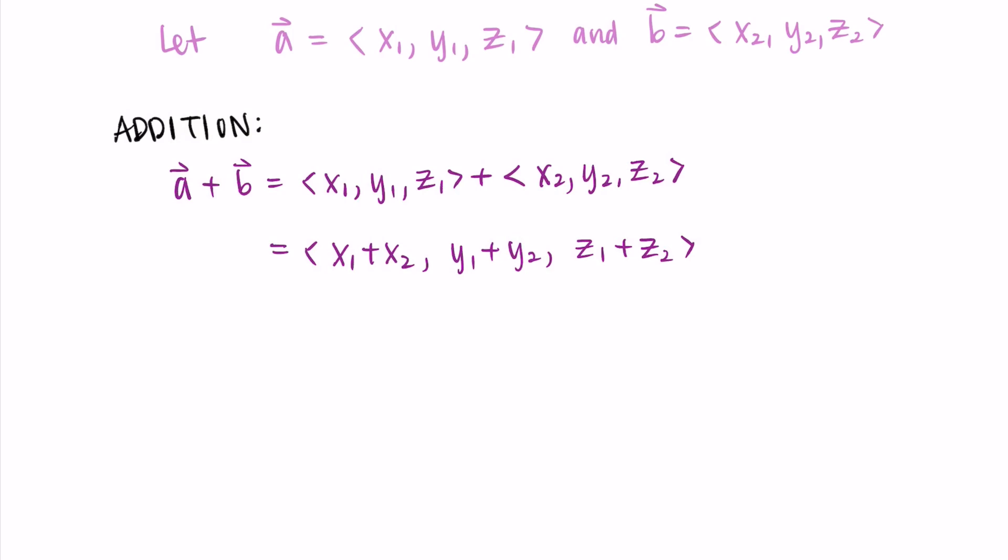So this should make sense just thinking about vectors in terms of movement. When we add two vectors, it's like we're doing both the a movement and the b movement. And the total movement would be all of the x movement, so x1 plus x2, and then all of the y movement, y1 plus y2, and all of the z movement, z1 plus z2. So this is as simple as adding the components. You can just think that addition works the way you'd want it to. Add the x's, the y's, and the z's, and make those the new components.